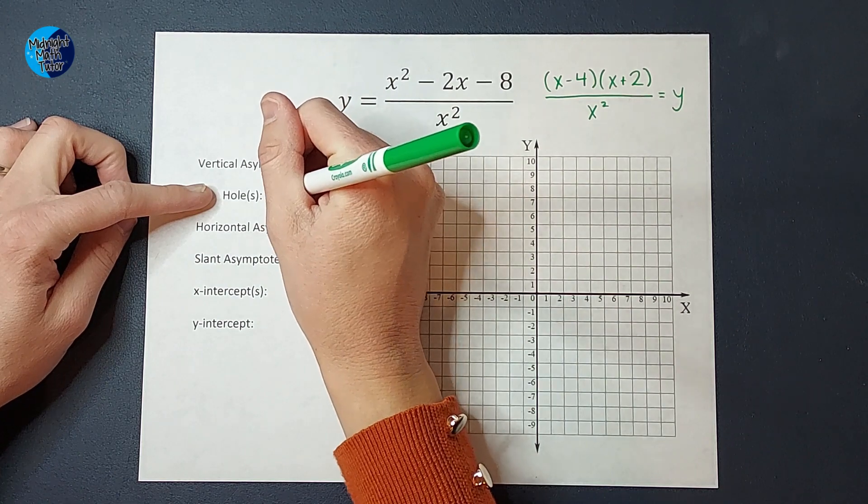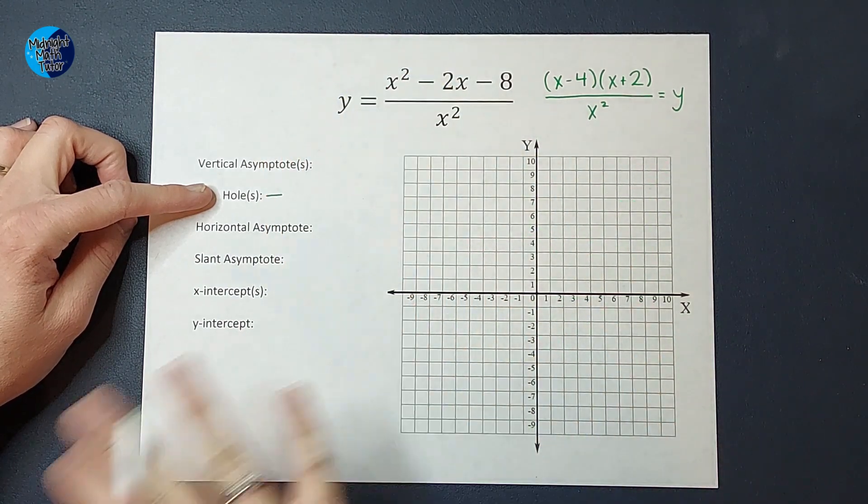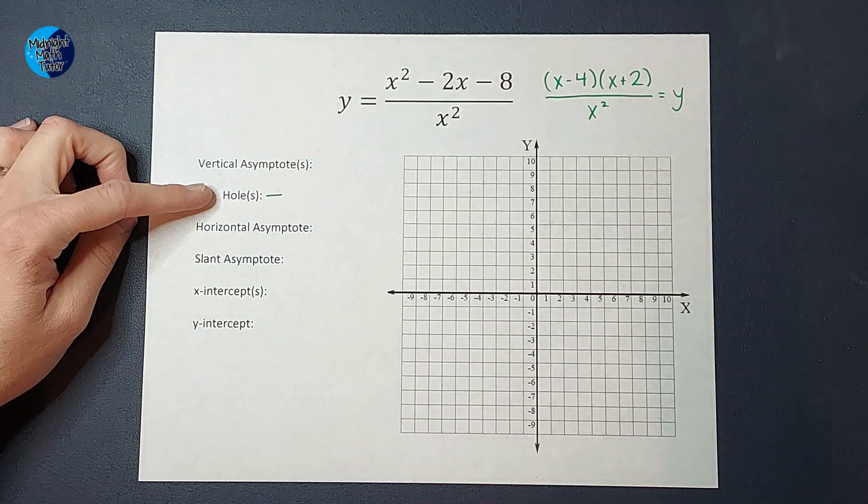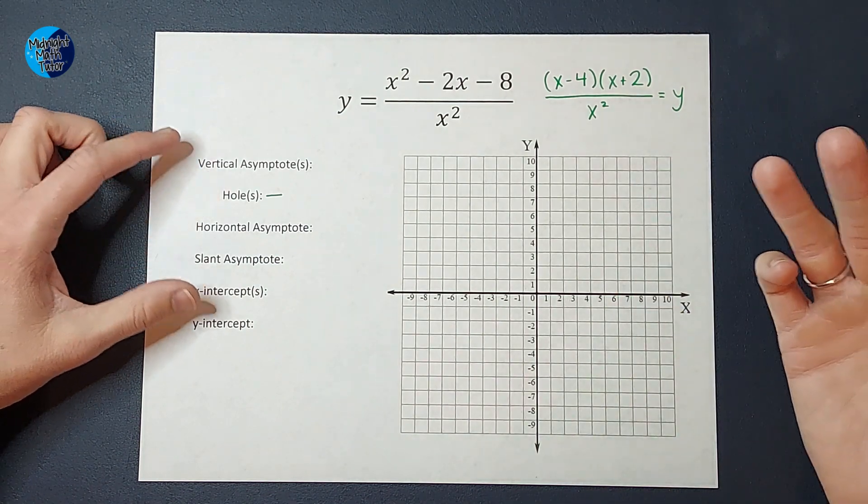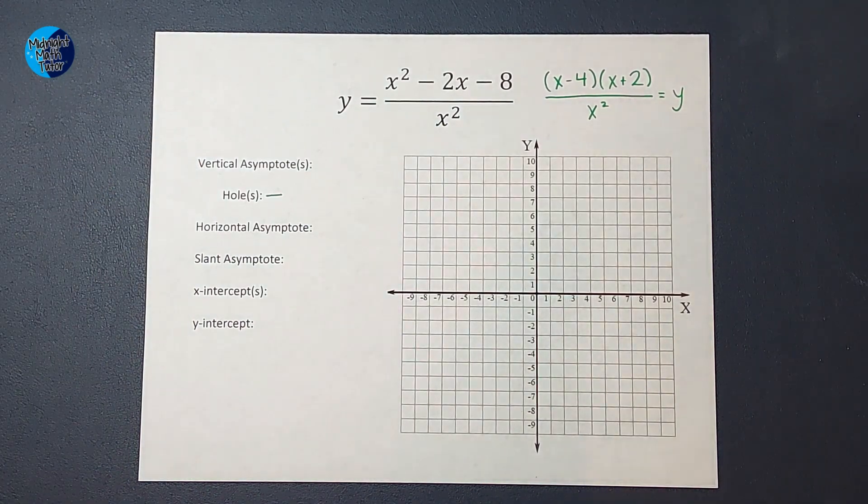So in this example, we do not have any holes. I will link an example in the corner if you want to see an example with a graph that has a hole. Okay. All right. Next thing we're going to do is find our vertical asymptotes.